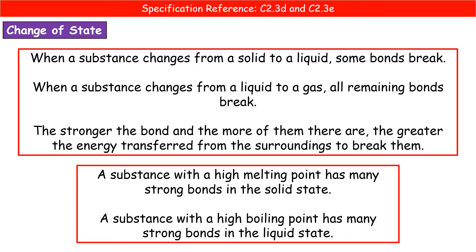If we consider the scenario where we're going from a solid to a liquid, we see that some bonds are breaking, which means the particles are then freer to move. Going from a liquid to a gas means all of the remaining bonds break, so the particles are now separate and free to move in any direction. Think back to the particle model — the fixed regular arrangement in the solid, to the more random arrangement in the liquid, and then the very spaced out random arrangement in the gas. It's all about breaking bonds between those individual particles.